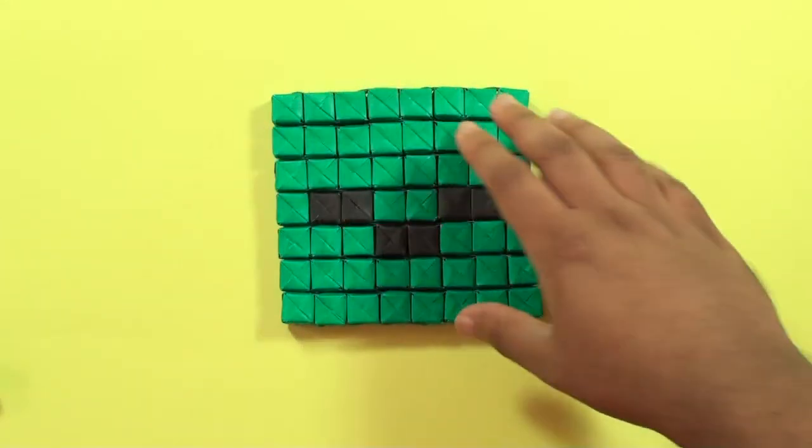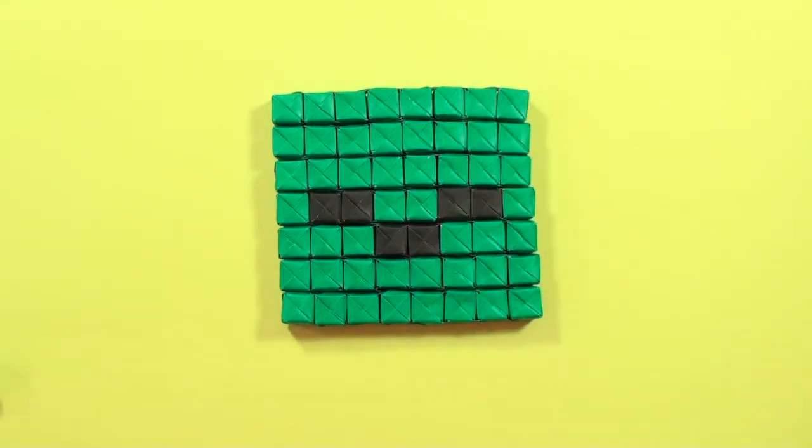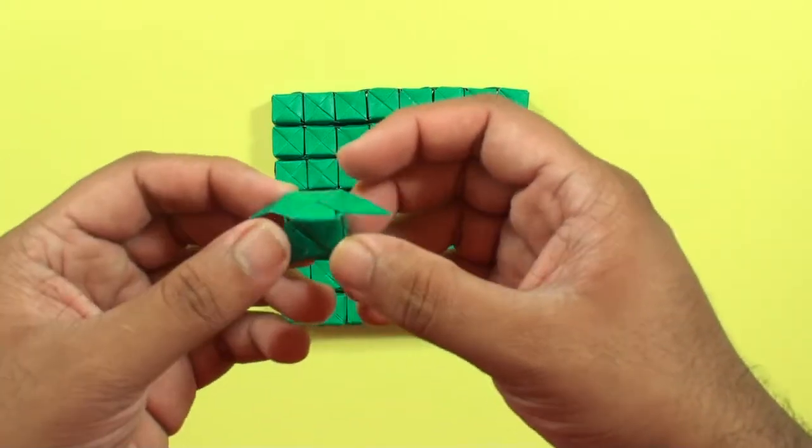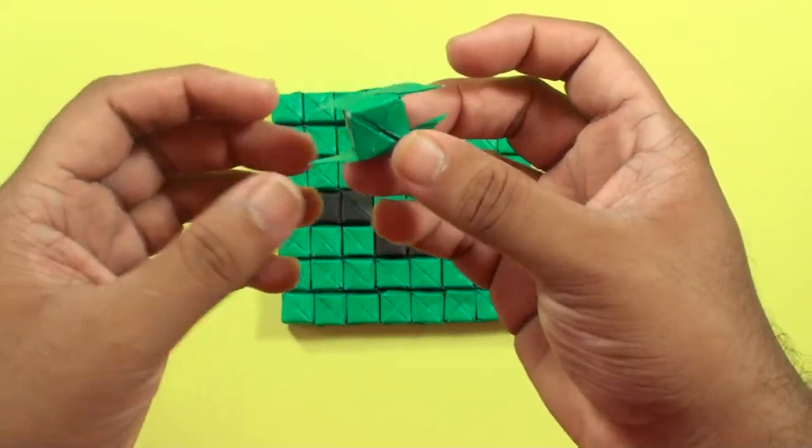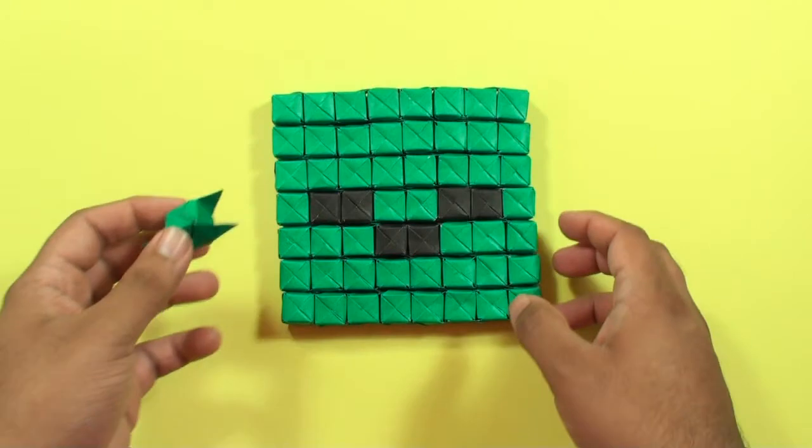During the assembly process all these units are actually made up of four different kinds of units. The first unit is this one here and we're going to call this unit A which has four flaps sticking out.